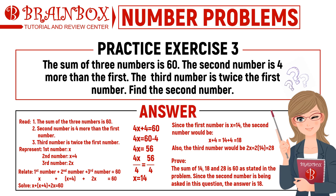We now represent these numbers with variables. First number: x. Second number: x plus 4. Third number: 2x. The sum of the three numbers is 60, so: x plus (x plus 4) plus 2x equals 60. We now proceed to solving this equation, combining like terms to get 4x plus 4 equals 60.